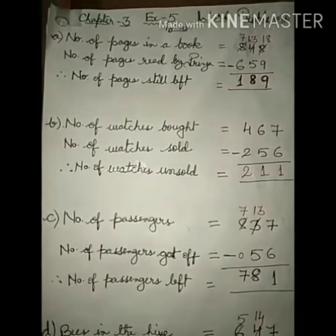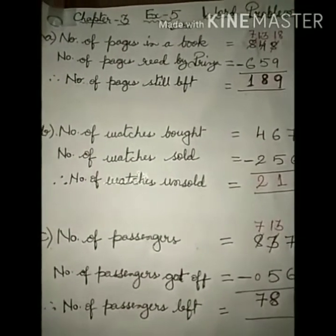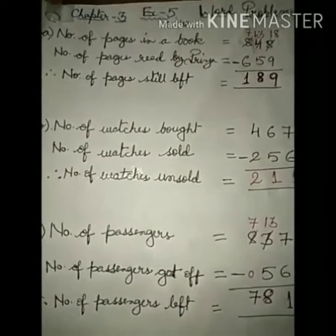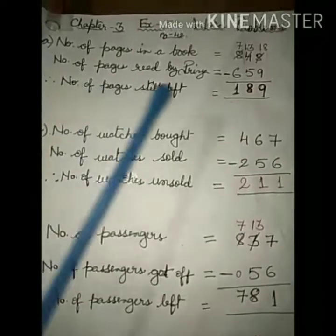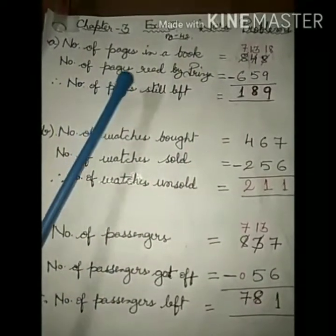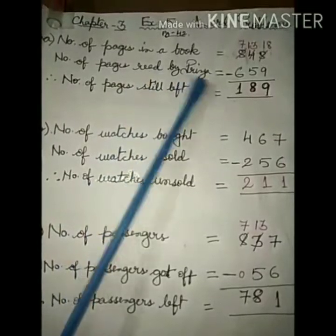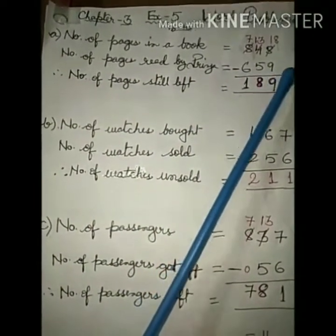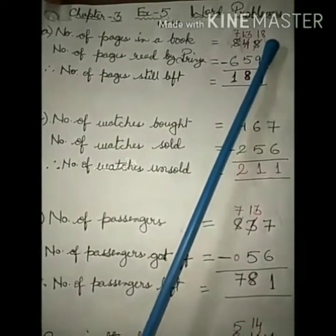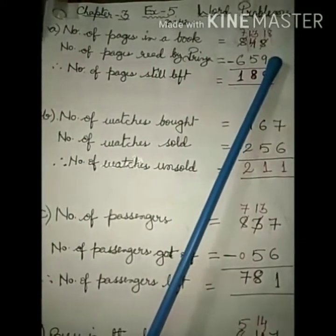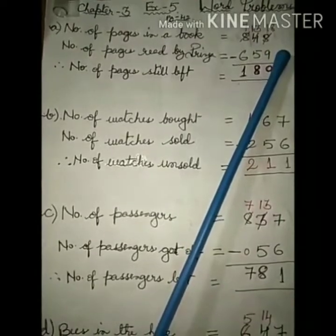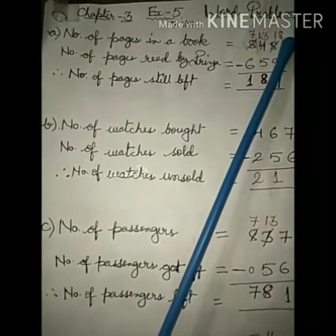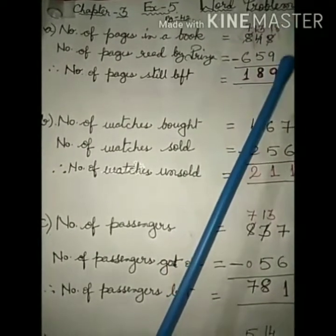How will you solve the problem? You have to write down the statements. Number of pages in a book: 848. Number of pages read by Priya: 659. So here you have to do the subtraction. 8 is smaller, you cannot subtract 9. Now what you will do? You have to borrow 1 from 4. So 18 minus 9 is equal to 9.